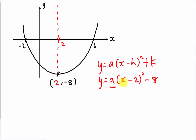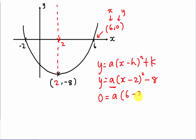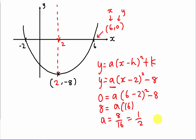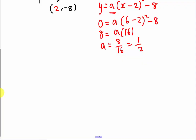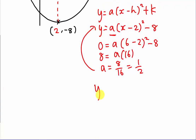To find a, substitute another point — not the minimum point. Use the x-intercept or y-intercept. Here I use the coordinate (6, 0): substitute x = 6 and y = 0 into y = a(x − 2)² − 8. Moving −8 to the other side: 8 = a(4)² = 16a, so a = 8/16 = 1/2.